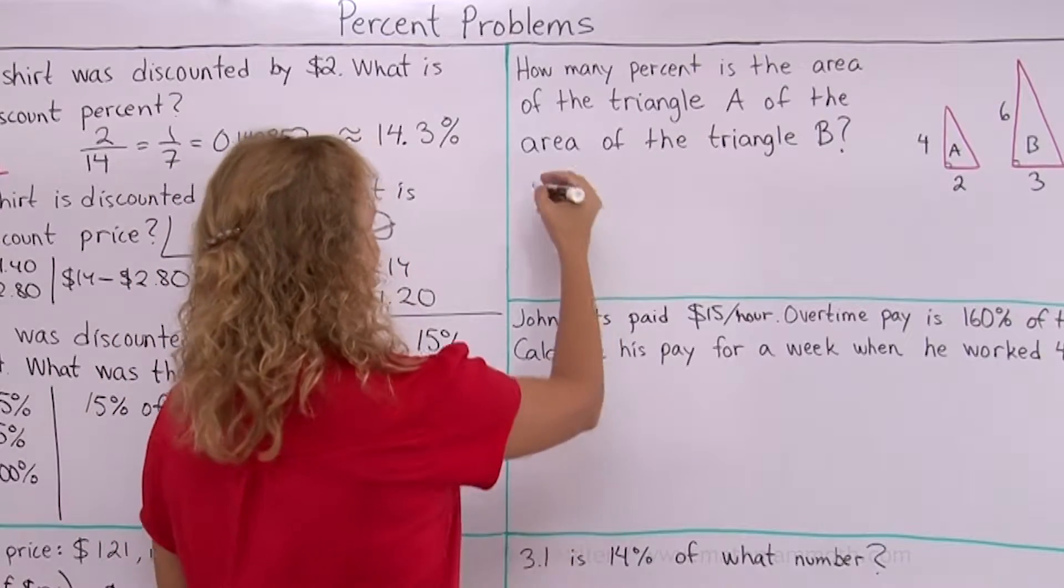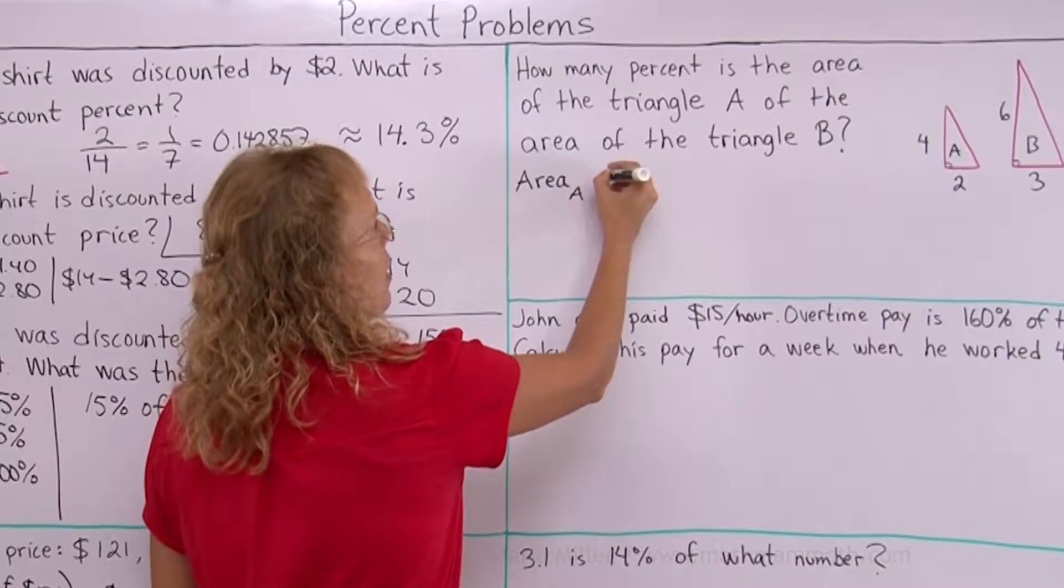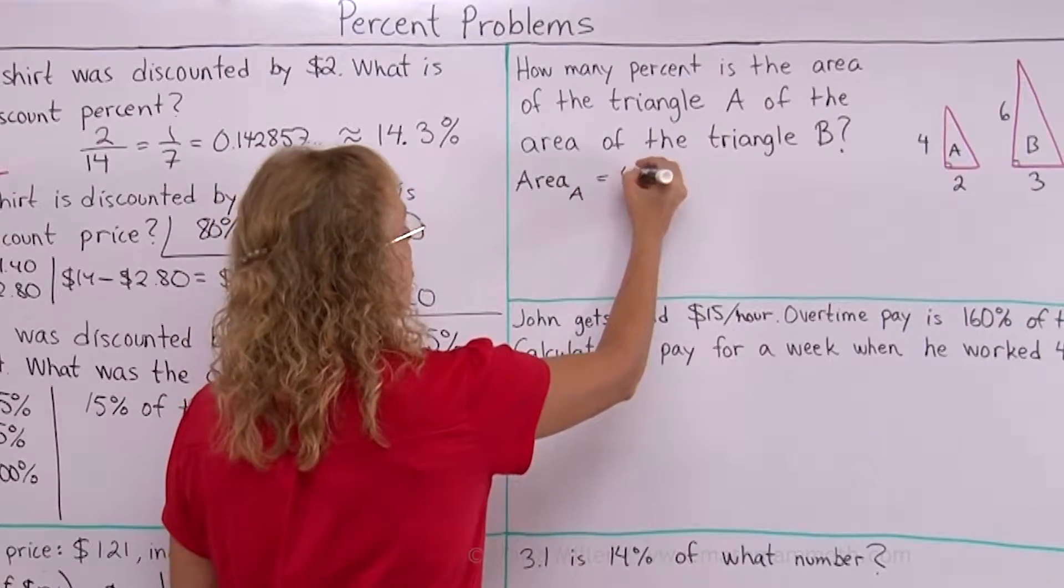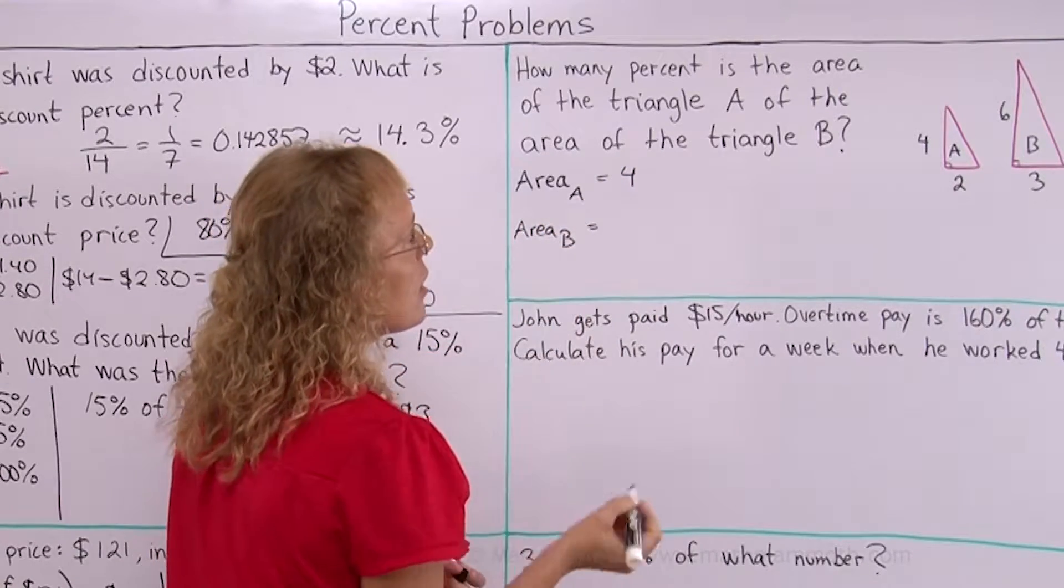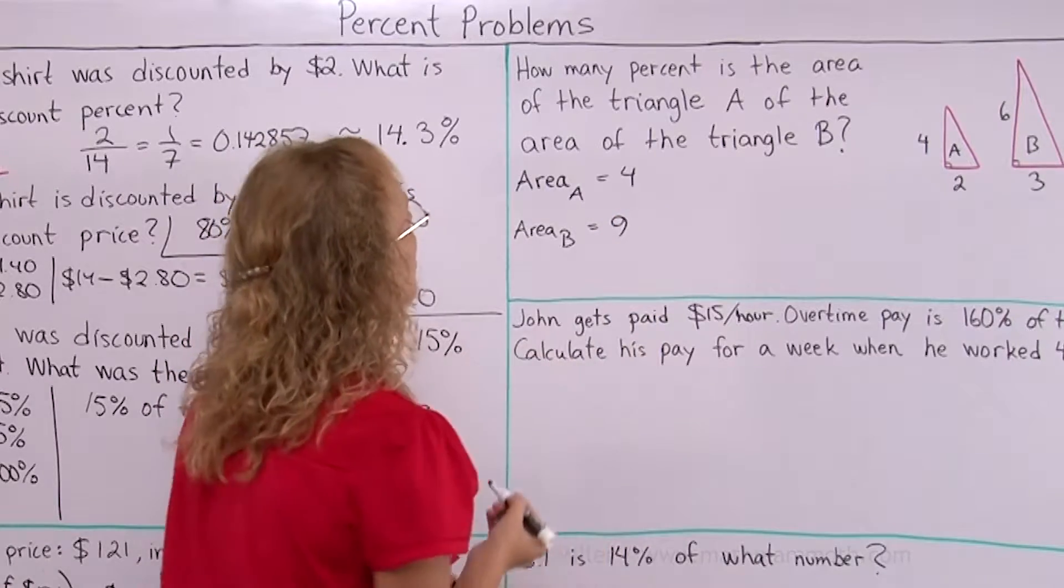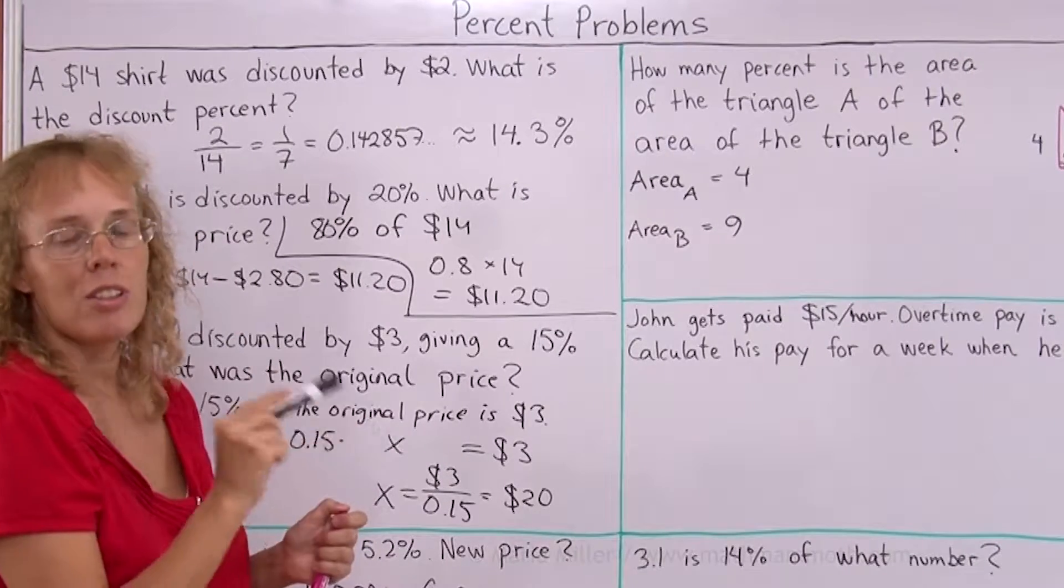Let's just check out the areas, the actual areas. Area of the triangle A is 4 times 2 divided by 2, that's 4. And the area of the triangle B is 6 times 3 divided by 2, that's 9. And so now I have my areas. How many percent is 4 of 9?